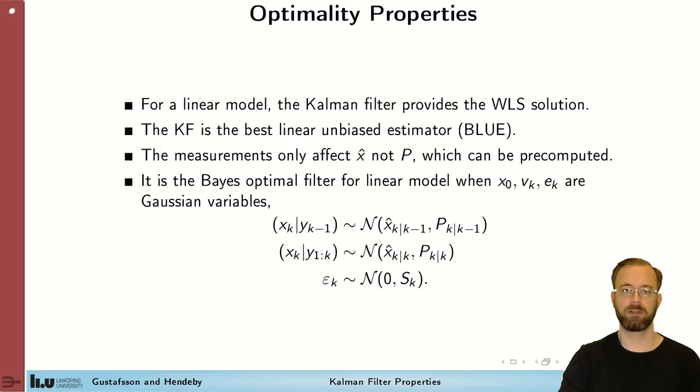Furthermore, the Kalman filter is the analytic solution to the Bayesian filtering recursion given that all involved stochastic variables are Gaussian. If that is the case, the prediction becomes a Gaussian distribution, the filtering estimate is also a Gaussian distribution, and this is important. The innovation, so the difference between the obtained and the predicted measurements are Gaussian with zero mean and known covariance.